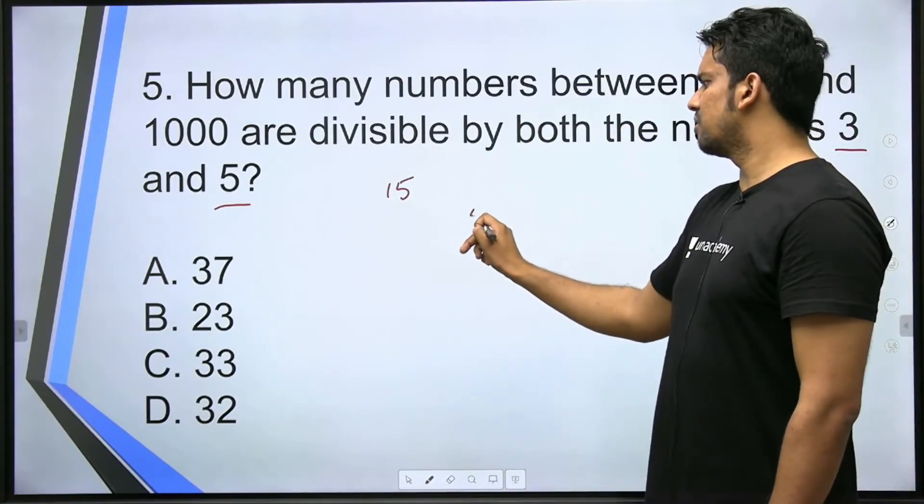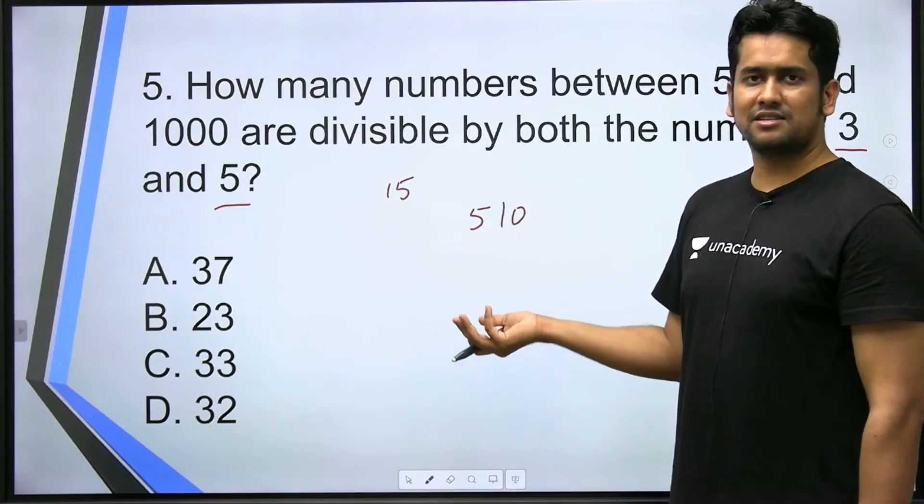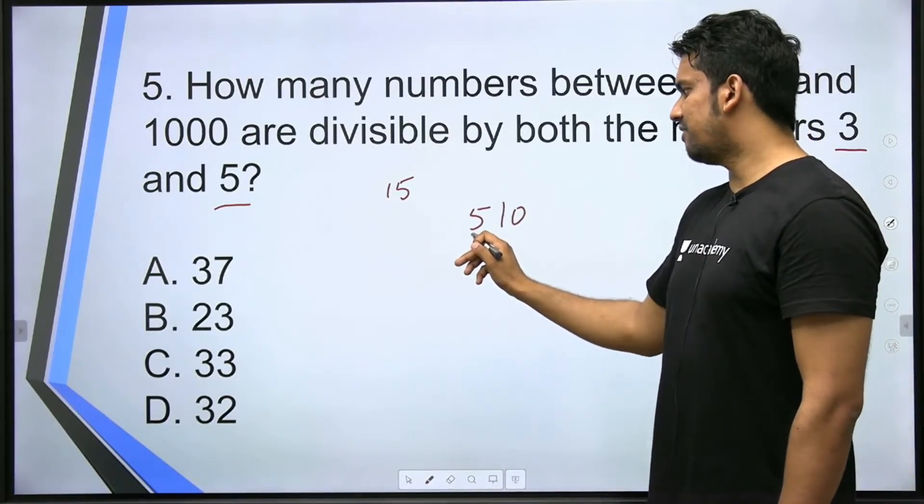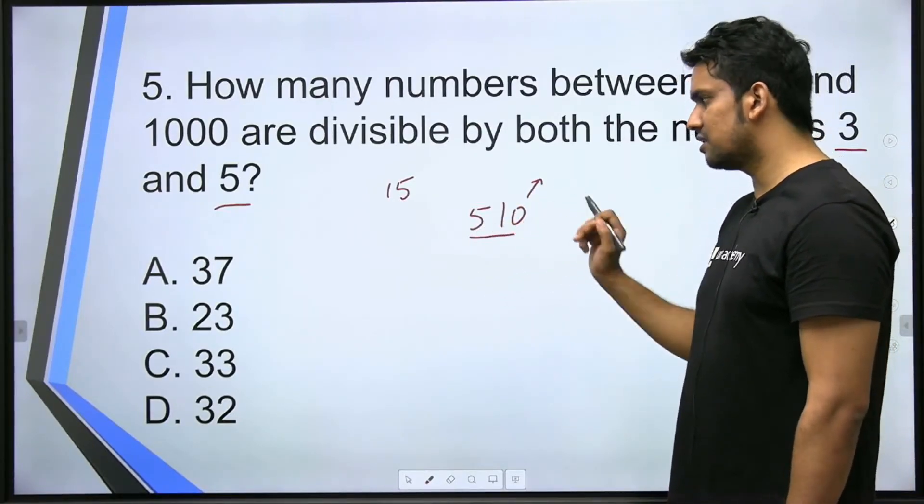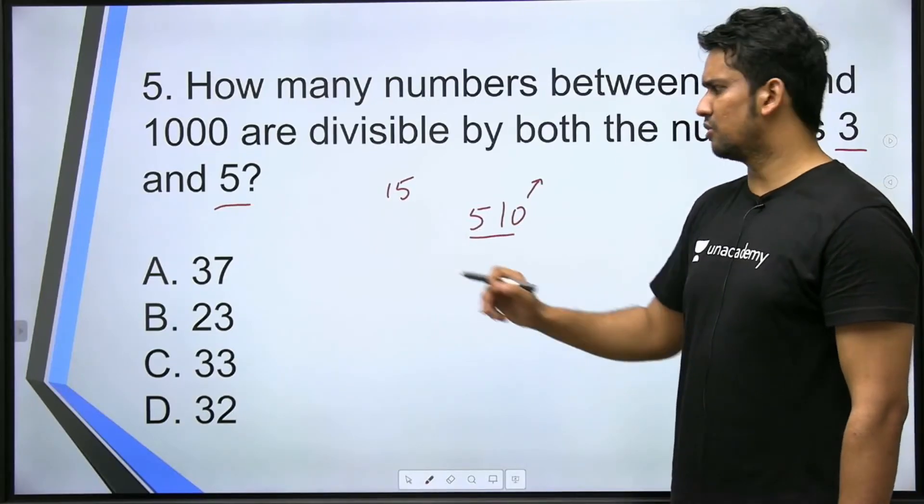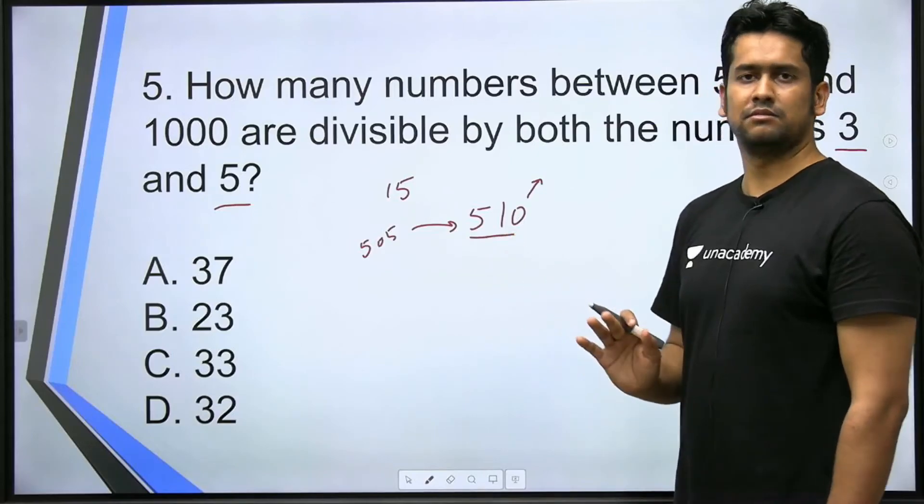Which number will it be? That number will be 510. Now you can ask how do I know directly? This number is divisible by 5 because its last digit is 0. This number is also divisible by 3 because its sum of digits is 6. So I just checked 505 and then 510.